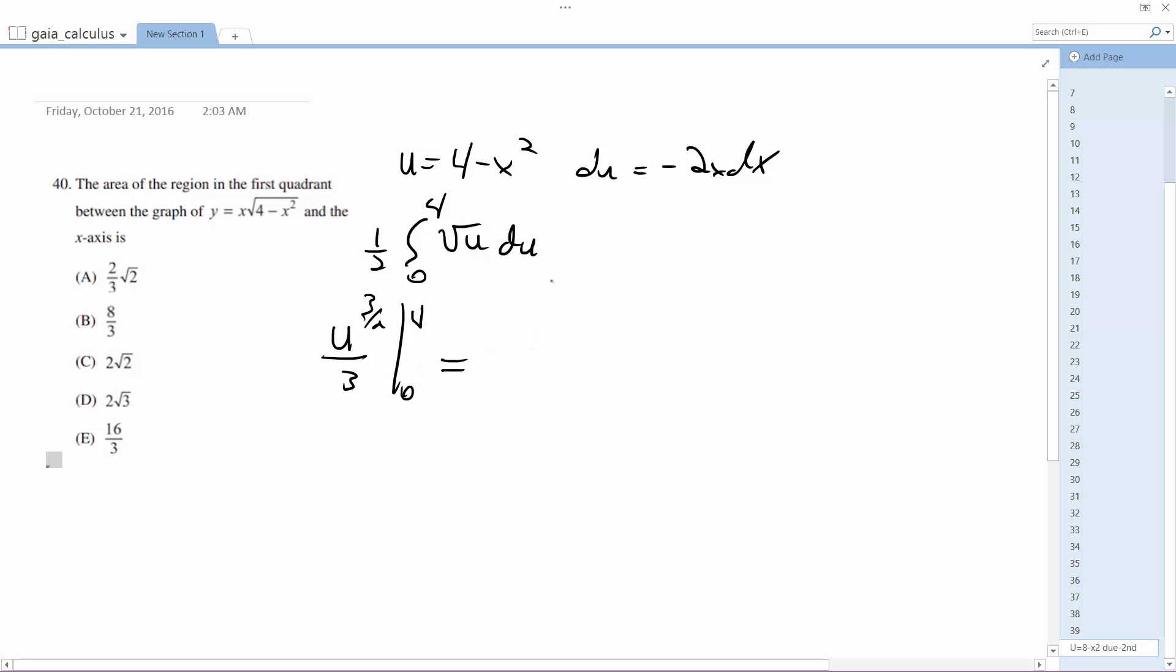We end up with 4 to 3 halves over 3 minus 0 to 3 halves over 3, which is just 0. So 4 to 3 halves is equal to 8 over 3, and that's our solution, which is b. That's it.